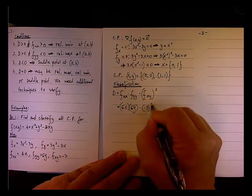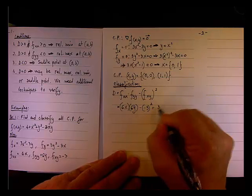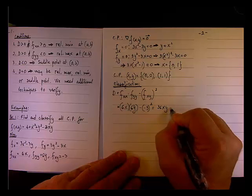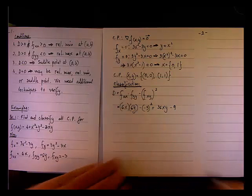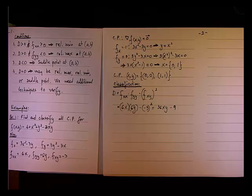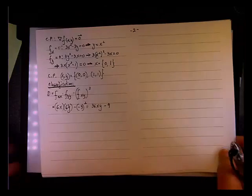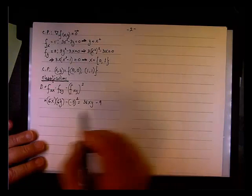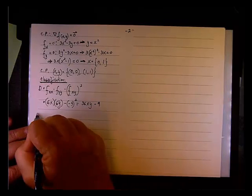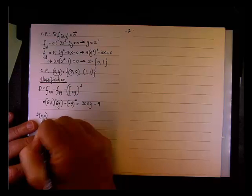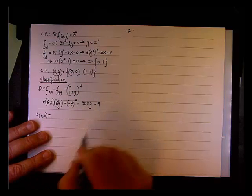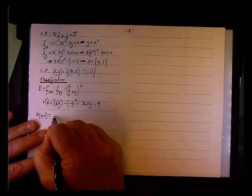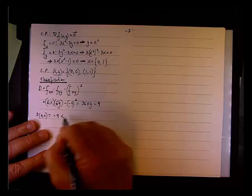So we are looking at 36xy - 9, okay? And now we have an expression for the determinant, and we can proceed just by replacing values.